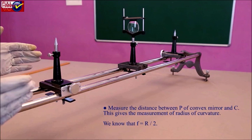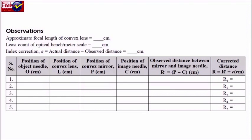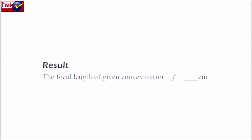Note the position of the image needle which should coincide with the center of curvature C of the convex mirror. Measure the distance between pole P of the convex mirror and C. This gives the radius of curvature R. Since F equals R divided by 2, the focal length of the given convex mirror can be determined.